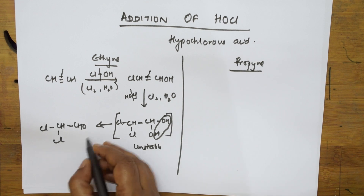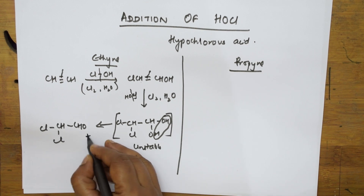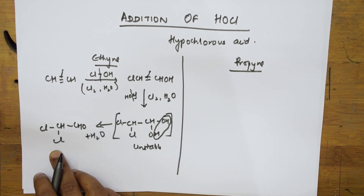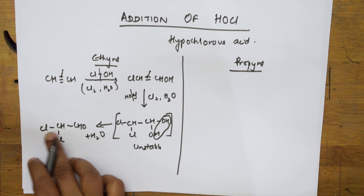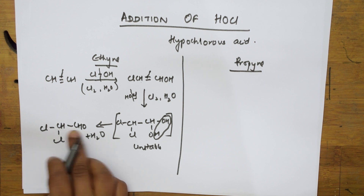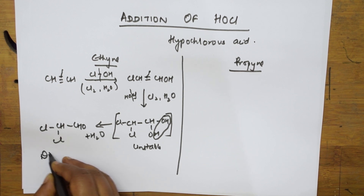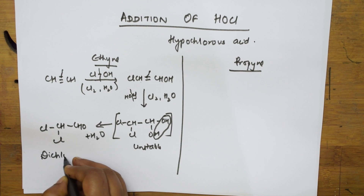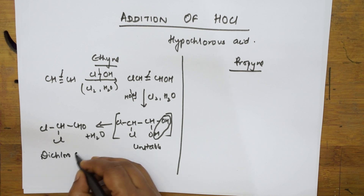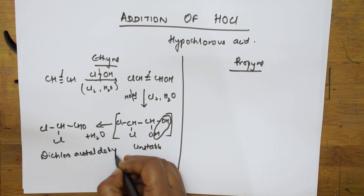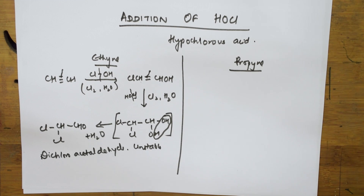The name of this compound — after water elimination — is dichloroacetaldehyde.